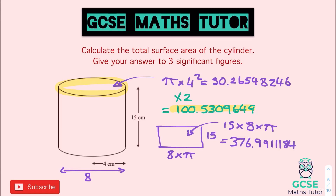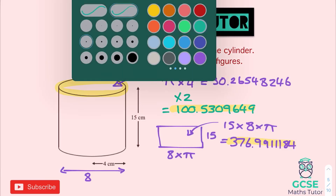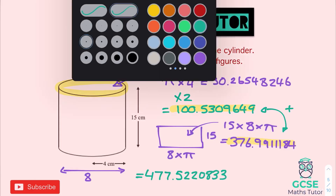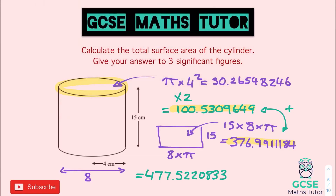That is our curved surface area. Adding the two areas together — curved surface area plus the two circles: 376.9911184 plus 100.5309649 gives us a final answer of 477.5220833. Rounding to three significant figures, we chop after the third digit — the final 7 — so to the nearest whole number, with a 5 after the line, that rounds up to 478 centimetres squared.